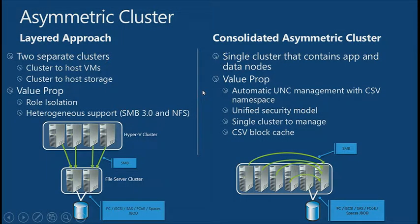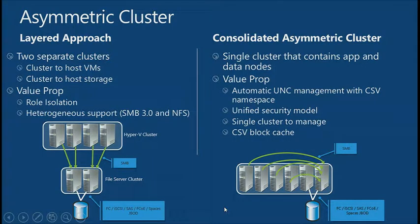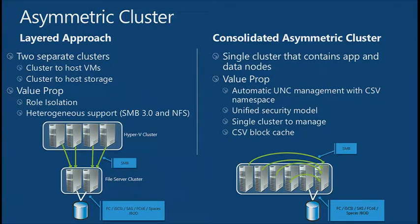You could have a cluster supporting your file server elements and then a separate Hyper-V cluster — or SQL Server 2012 is also supported as a workload on top of SMB3. Alternatively, you can move to a single cluster — up to 64 nodes — where maybe three or four nodes run Hyper-V and two nodes run SMB3, rather than managing two separate clusters.